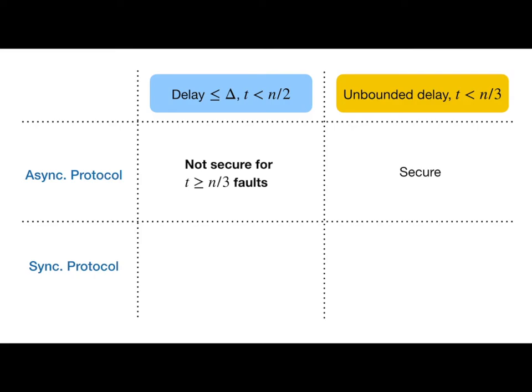On the other hand, suppose we have a protocol that is secure in a synchronous network, where the delay is at most some fixed delta, and we run that protocol in a network where the message delay might exceed delta. If the delay exceeds delta even by a tiny bit, and even if the number of faults is less than N over 3, our proof of security doesn't hold anymore, and it's not clear what will happen.